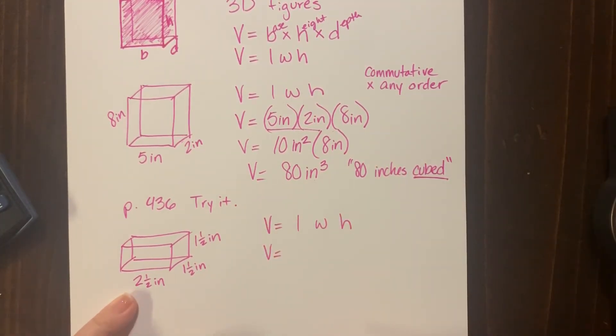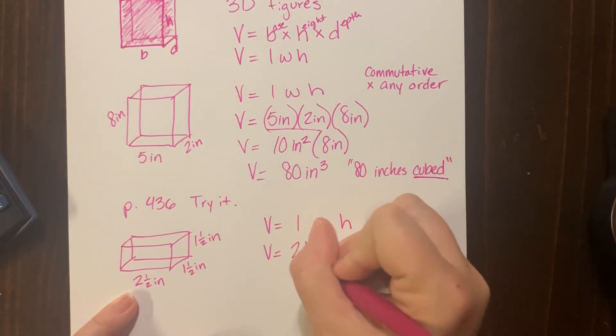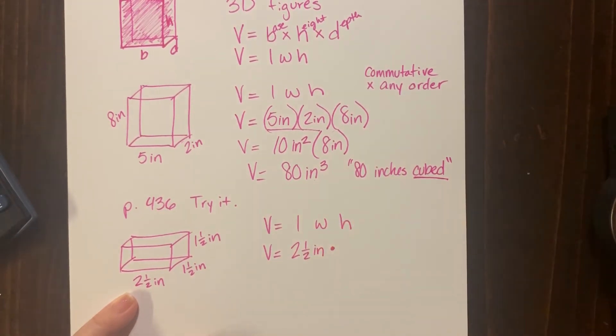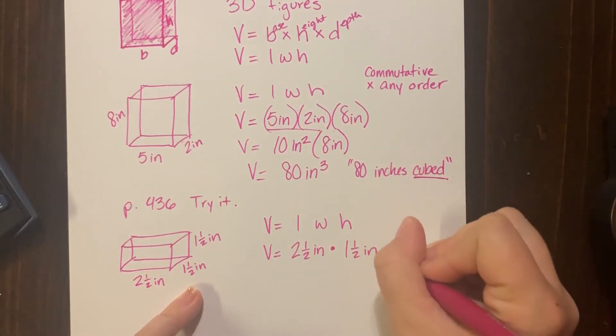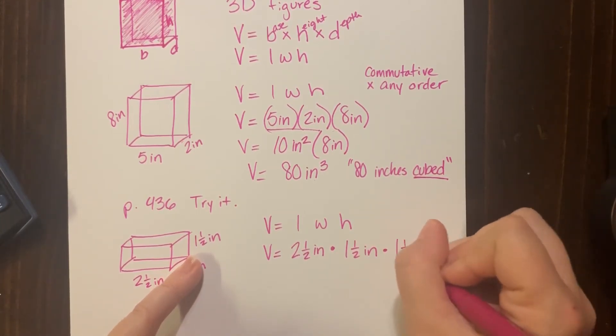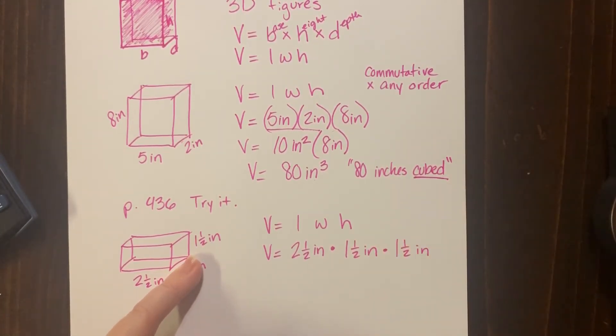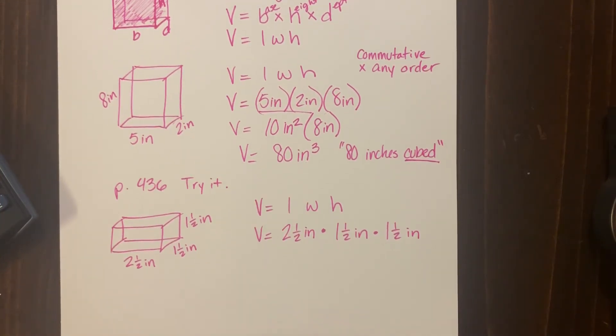All right, so we're going to find the volume of the shape: length, width, height all multiplied together. The length is the kind of like the base, the front length—that's two and a half inches. I'll use the dots this time. The width, how wide it is, one and a half inches, and the height, another one and a half inches. Again, any order, I don't care, as long as you're multiplying all three dimensions by each other. It doesn't matter which order they're in, so it doesn't matter if you've messed up which was the height and which was the length or so on and so on.